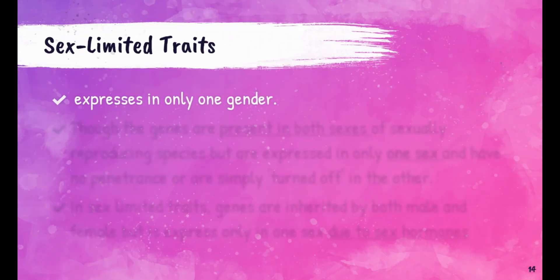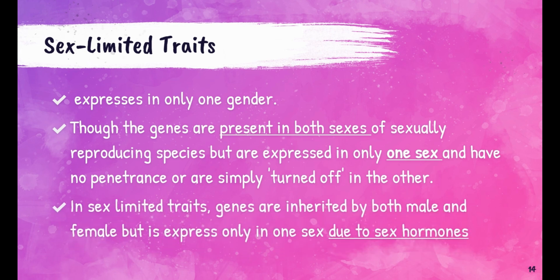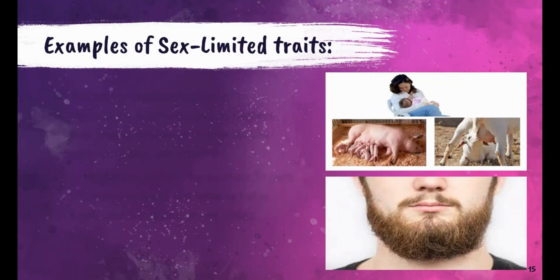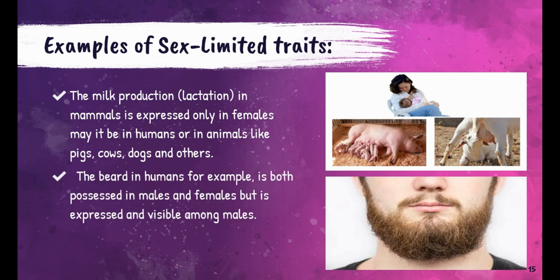Sex-limited traits are expressed in only one gender. Though the genes are present in both sexes of sexually reproducing species, they are expressed in only one sex and have no penetrance or are simply turned off in the other. In sex-limited traits, genes are inherited by both male and female but are expressed in one sex due to sex hormones. Examples include milk production or lactation in mammals, which is only expressed in females — whether in humans or animals like pigs, cows, and dogs — and beards in humans, which are present in both sexes but visibly expressed among males.